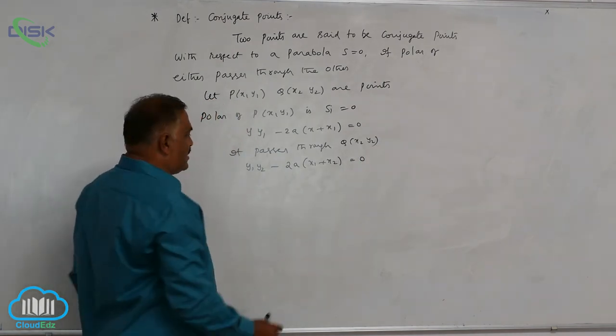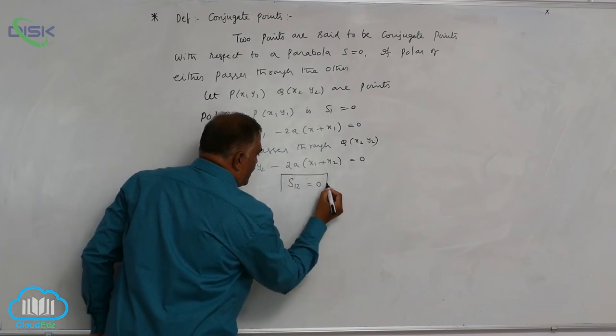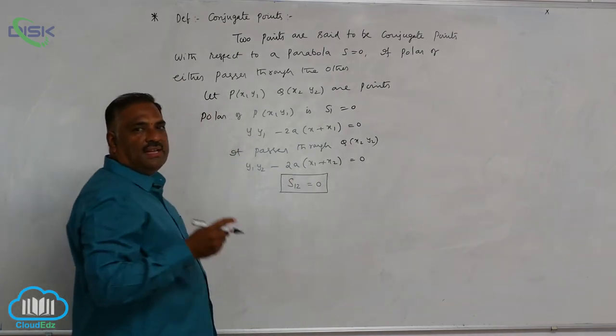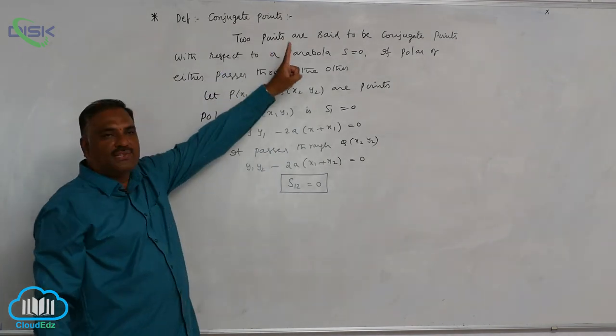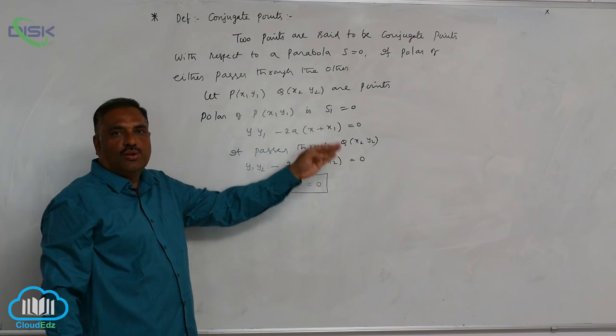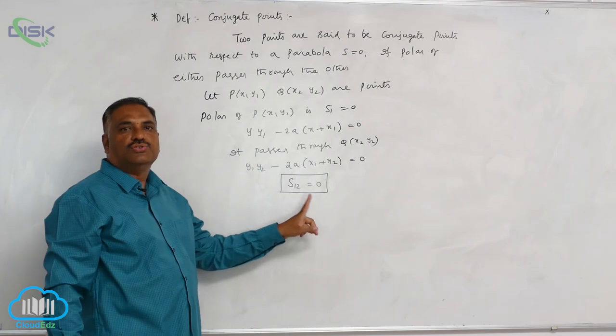According to our notations, this is S₁₂ equal to 0. We derive a similar relation in circles also. So condition for the two points (x₁, y₁) and (x₂, y₂) to be conjugate with respect to the parabola is S₁₂ is equal to 0.